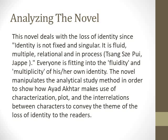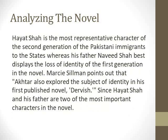This novel deals with the loss of identity, since identity is not fixed and singular — it is fluid, multiple, and relational in process. Everyone is navigating a fluidity and multiplicity of their own identity. The novel uses characterization, plot, and interrelations between characters to convey the theme of loss of identity. Hayat Shah is the most representative character of the second generation of Pakistani immigrants in the United States, whereas his father Naveed Shah best displays the loss of identity of the first generation.